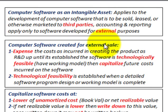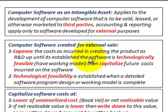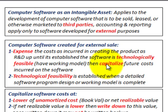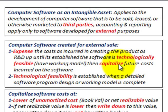Computer software created for external sales to third parties — you'd expense the cost as incurred as research and development expense up until it's established that the software is technologically feasible. That is, you have a design and a working model. Then any costs after that point, we'd capitalize future costs incurred on this software. After we've come up with our working model, we would have expensed all those costs up until that point, and then capitalize any remaining costs after we had this working model.